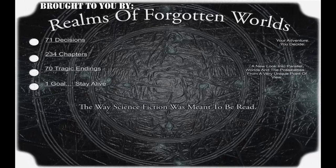Welcome back to another video tutorial brought to you by Realms of Forgotten Worlds, where your adventure you decide. It's multi-option science fiction where you can really decide where you want to go and end the story. 71 decisions, 234 chapters, 70 tragic endings, and one goal: stay alive. This is the way science fiction was meant to be read.